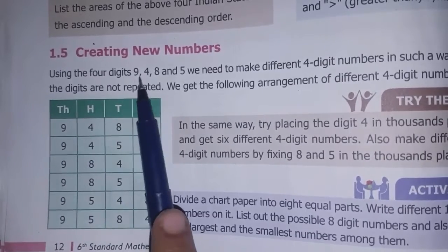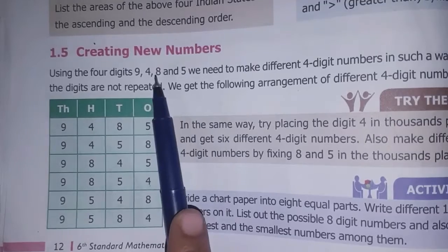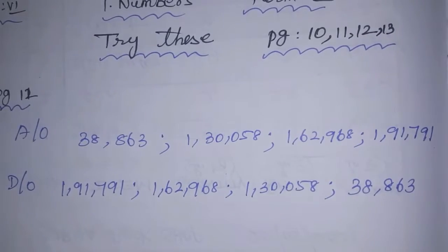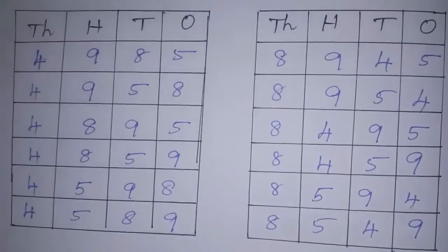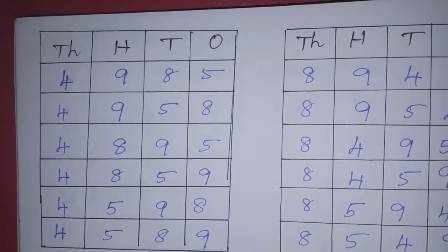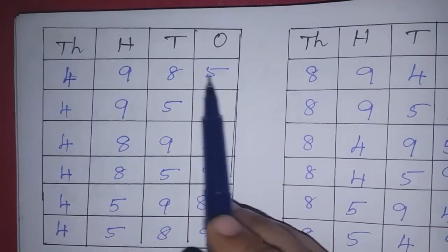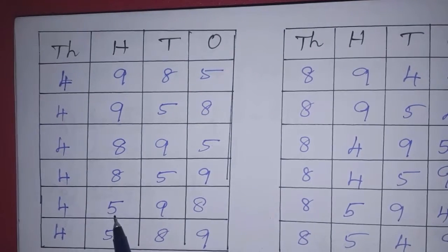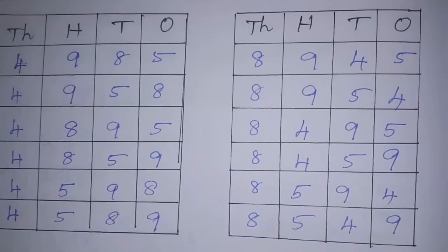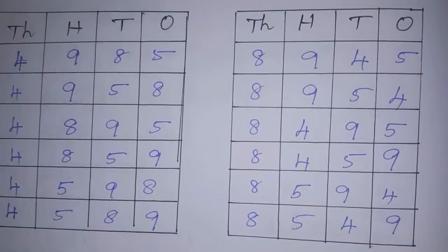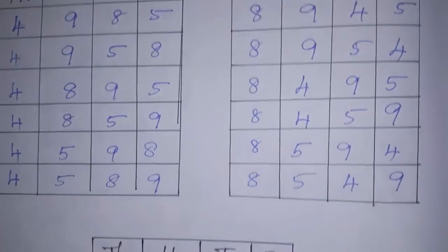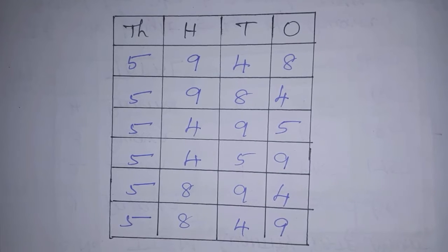For 4 in the 1000s place: 4985, 4958, 4895, 4985. For 8 in the 1000s place, there are 6 numbers. For 5 in the 1000s place, there are 6 numbers. Each fixed digit in the 1000s place gives 6 different 4-digit numbers using 9, 4, 8, 5 without repetition.